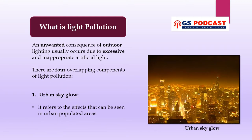Light pollution is an unwanted consequence of outdoor lighting, and this kind of pollution usually occurs due to excessive and inappropriate artificial light. There are four overlapping components of light pollution. The first one is urban sky glow, which refers to the glow effects that can be seen in urban populated areas. Sky glow is the combination of all the reflected light and upward directed light escaping up into the sky.